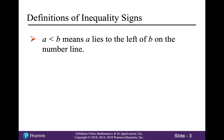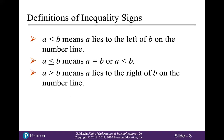Starting with review of our inequality signs: a is less than b means a lies to the left of b on the number line. A is less than or equal to b means either a equals b or a is less than b. A is greater than b means a lies to the right of b on the number line. And a is greater than or equal to b means either a equals b or a is greater than b.